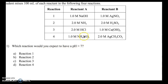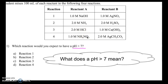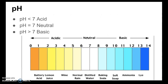Now that we've read the problem, we need to analyze what it means. The first thing I want to focus on is pH greater than 7, because that's what I'm asked to find. pH is a value given to a solution that tells us whether the solution is acidic, basic, or neutral. When pH is less than 7 it's acidic, when it's approximately equal to 7 it's neutral, and if it's greater than 7 it's basic. So we're looking for a basic solution.